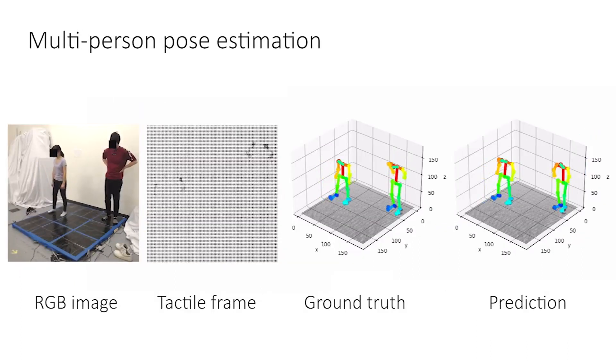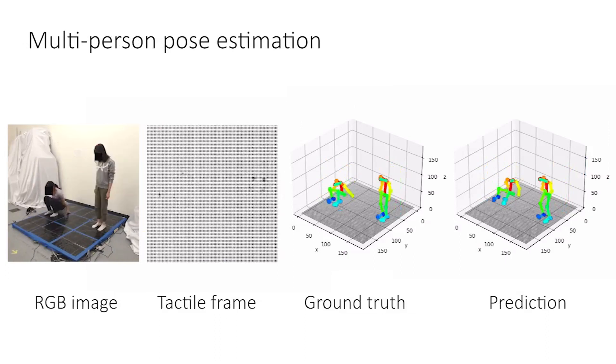We further extend our model for multi-person pose estimation. Using only the tactile information, our model localizes each individual and predicts his or her 3D pose with the localization error less than 15cm.